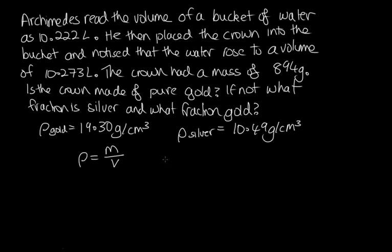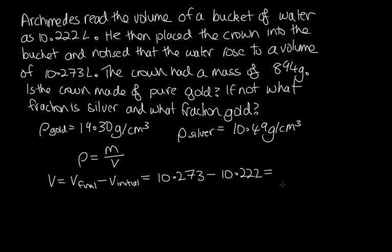To work out the density, we need density equals mass over volume, so we first need the volume of the crown. The volume equals the final volume of the bucket minus the initial volume: 10.273 minus 10.222, which equals 0.051 litres. These densities are in centimetres cubed, which is millilitres. To convert, we multiply by 1,000, so the volume of the crown equals 51 centimetres cubed — or millilitres, as those are the same units.